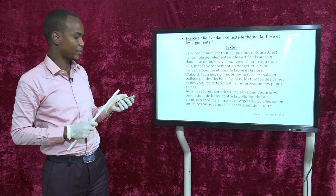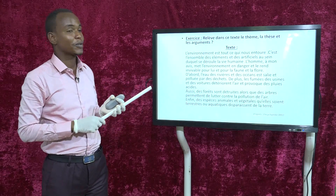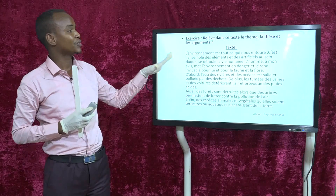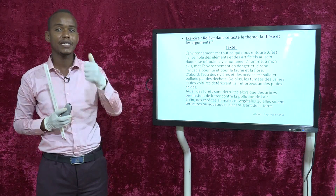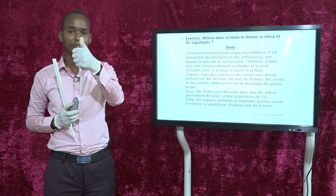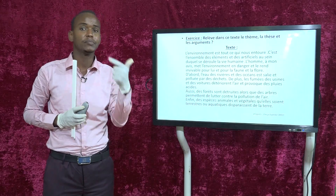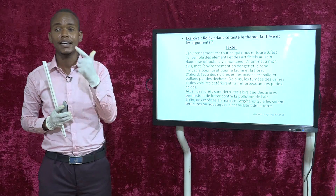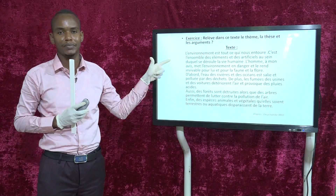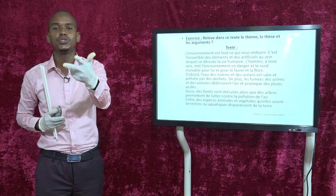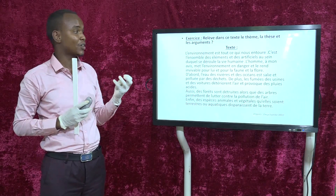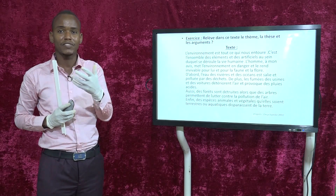Avant d'entamer l'exercice, j'aimerais rappeler les quatre points importants d'un paragraphe argumentatif. Premièrement, le thème : c'est le sujet dont on parle, écrit ou oral. Deuxièmement, la thèse : c'est l'opinion ou l'avis que l'auteur porte à propos du thème. Troisièmement, les arguments : ce sont les raisons qui justifient l'opinion de l'auteur. Et finalement, les exemples : ils illustrent et expliquent de façon détaillée les arguments.